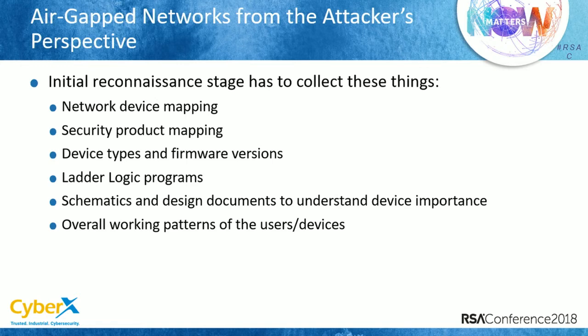To map the network, we'd like first to understand which devices are there, which security products are there. Because if we're executing an attack, we need to understand what we're up against. We'll probably also need the schematics of the network and the ladder logic — the programming — to understand exactly how the process works. If an attacker wants to harm a specific process in that network, they need everything before they can do it.